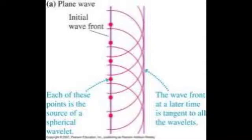Huygens' Principle can be used to derive the properties of any wave, including one that interacts with matter. But the same results can be obtained by treating the propagating wave as a straight line perpendicular to the wavefront. This line is called a ray, and the simplification is called the ray approximation.